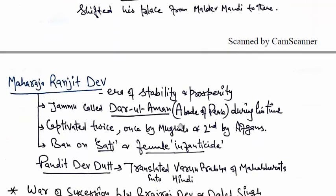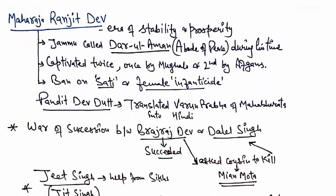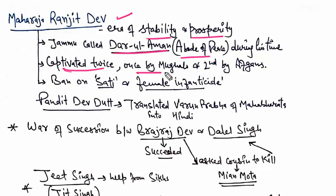The most important ruler of this dynasty was Maharajah Ranjit Dev. His period is known as one of stability and prosperity. He also put a ban on female infanticide.